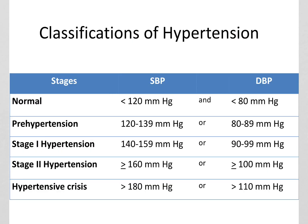These are the classifications. The threshold for diagnosis is 140 over 90. It's worth pointing out pre-hypertension — when you're in pre-hypertension, you're typically not receiving medical treatment. It's more about lifestyle modifications and encouragement to prevent the onset of hypertension.